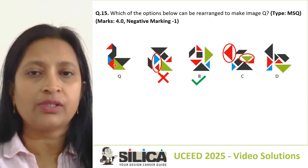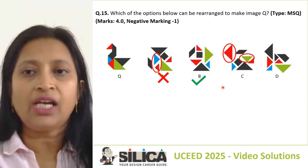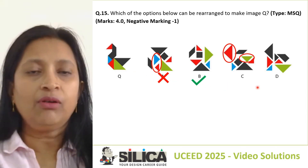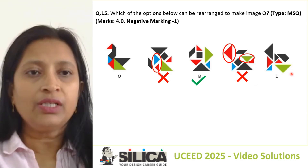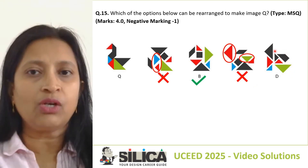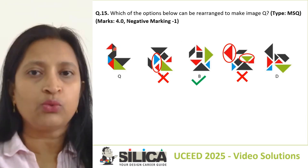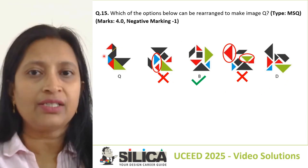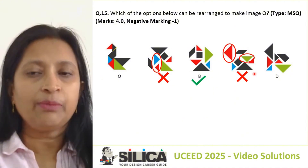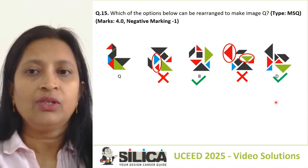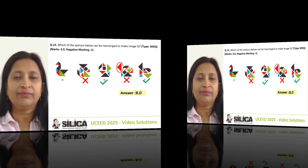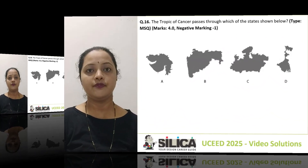For option C, these two shapes have their sizes interchanged, so it will not be correct. For option D, all are matching. If you make a line like this, you can see these two shapes — combining these two will get this shape. So option D is also correct. The correct answers are B and D.